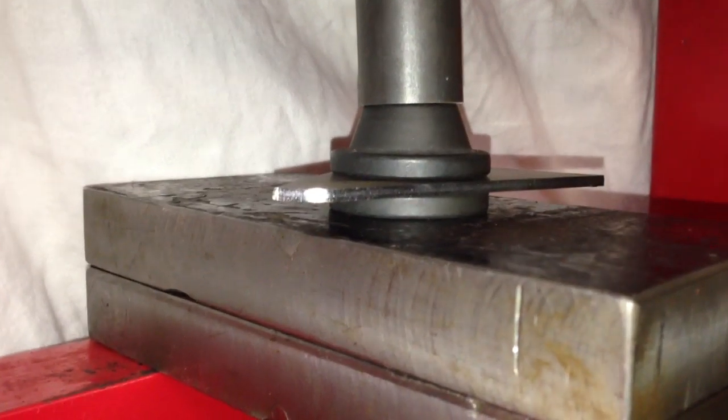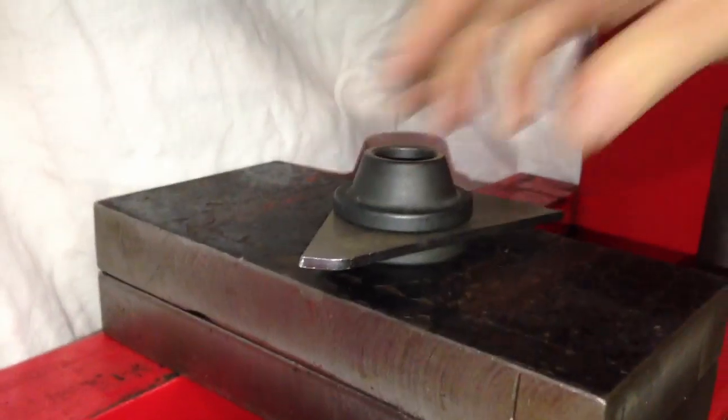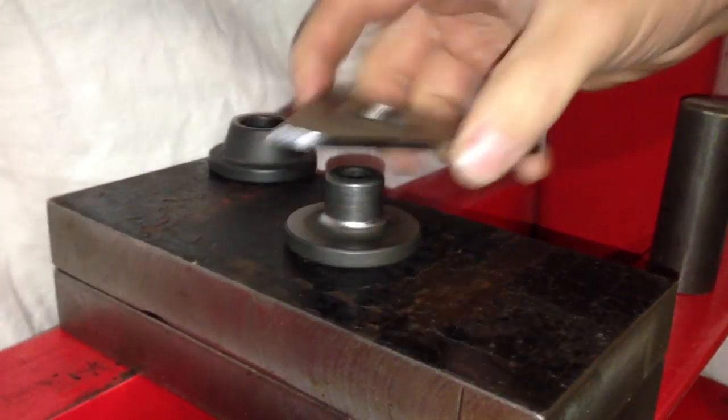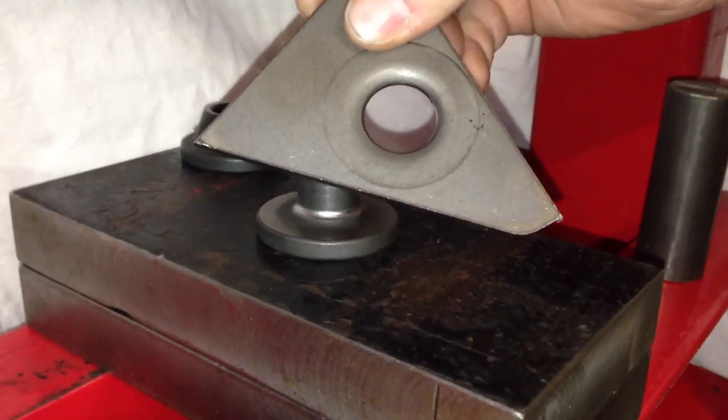Once the two dies have been bottomed, we'll simply release the press. Remove our top die, there's our dimpled and flared hole. We'll see you next time.